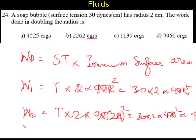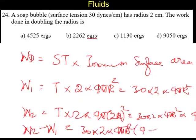The extra work in blowing the bubble, ΔW is going to be equal to W2 minus W1, equal to 30 times 2 times 4πR² times (4 minus 1).